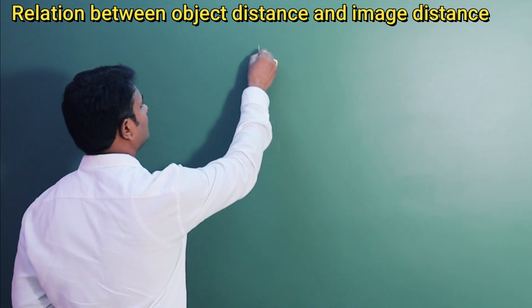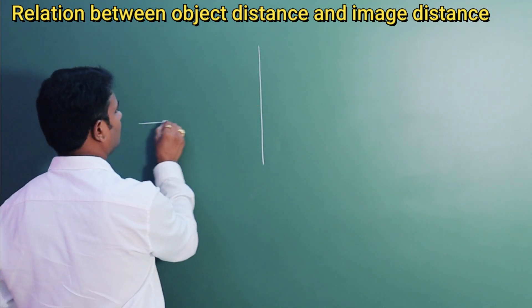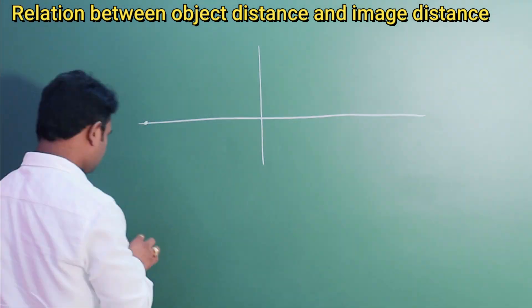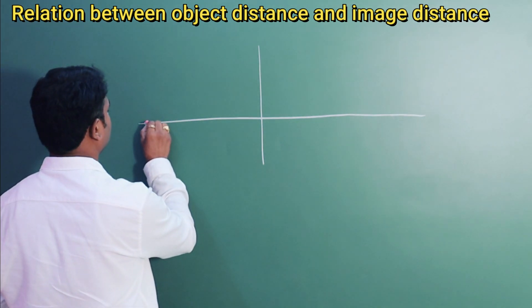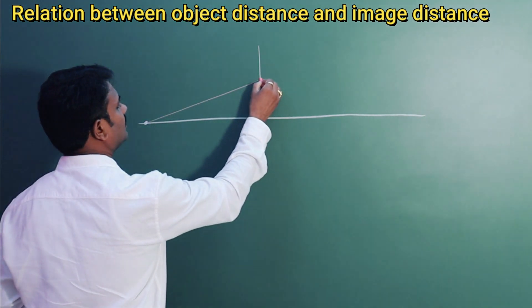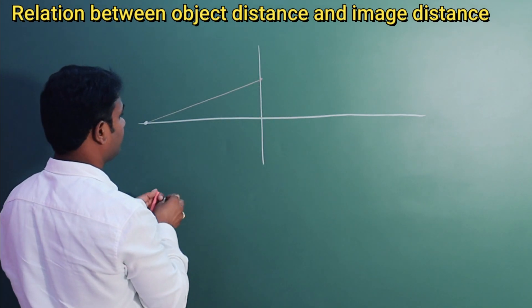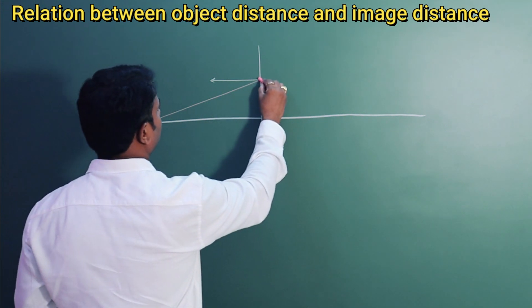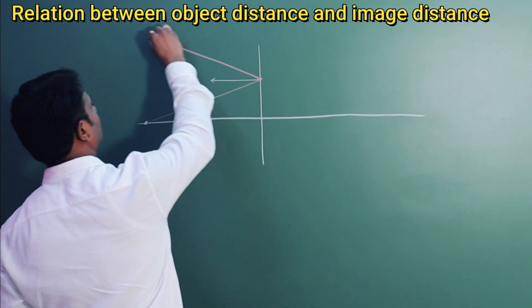See, these are the plane mirror. This is a point object placed here. This is incident ray. This is normal. And the ray will be reflected like this.